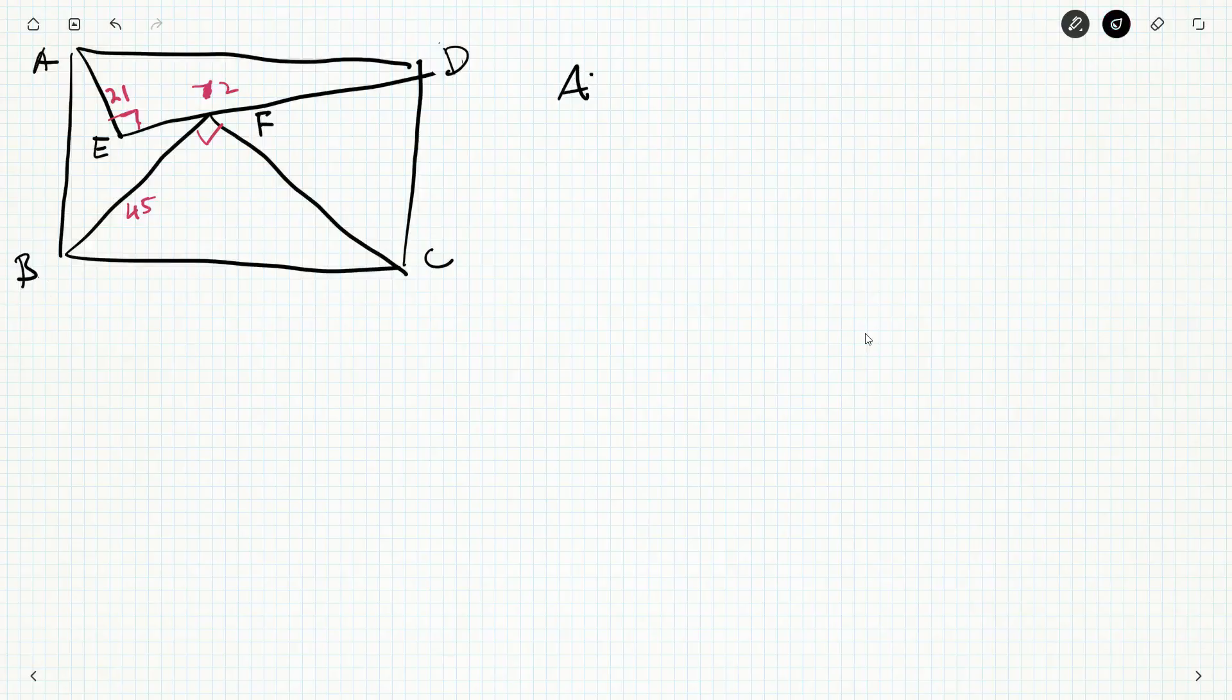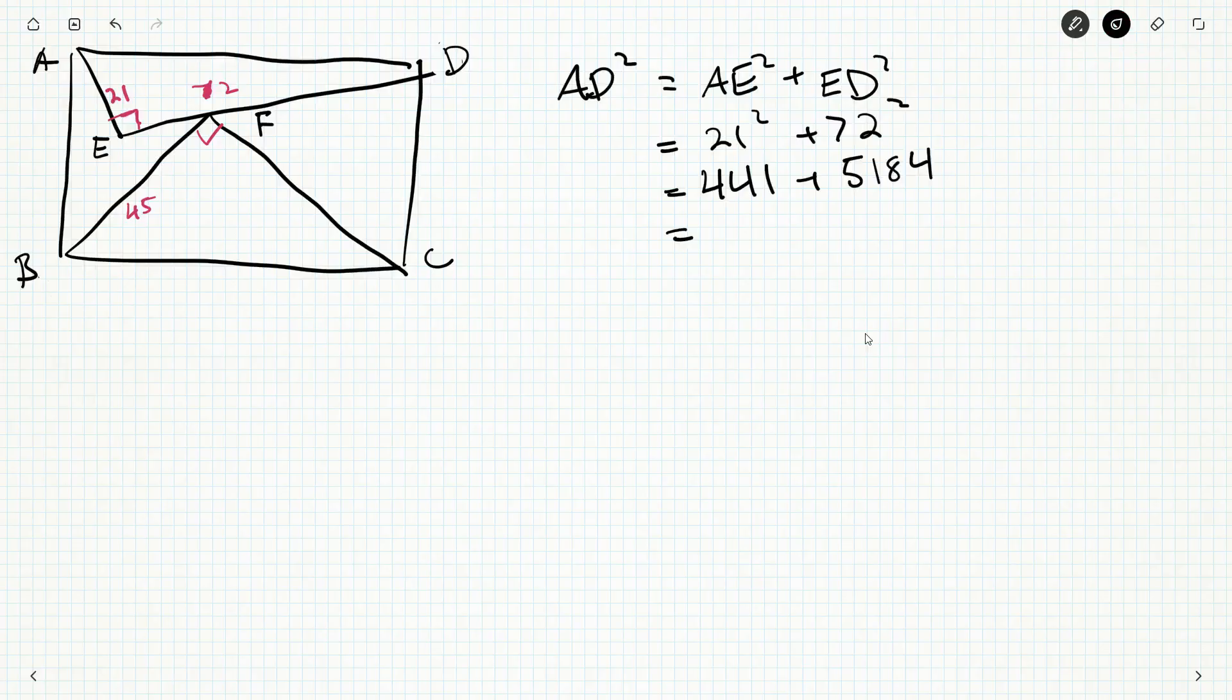By Pythagorean theorem, AD squared is AE squared plus ED squared. 21 squared plus 72 squared, I don't know what 72 squared is off the top of my head. 5184 and add on 441 to that, and we get 5625. The 25 at the end makes me think we've got a 5, and 56 is 7 times 8, so this should be 75 squared.